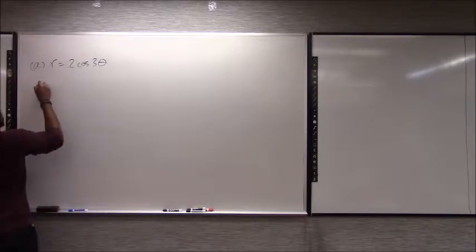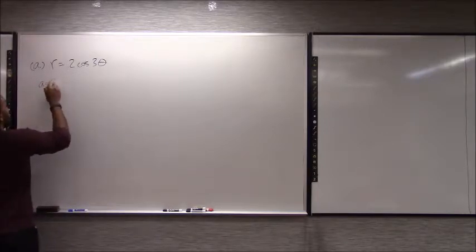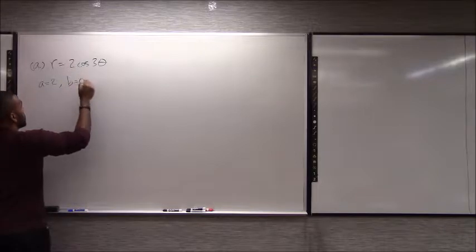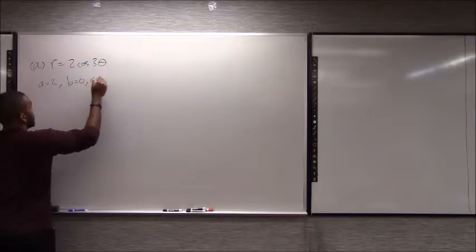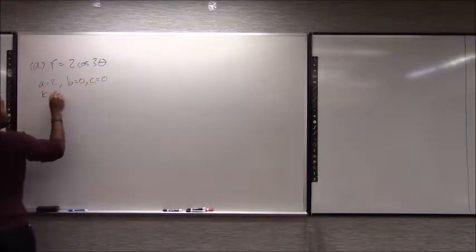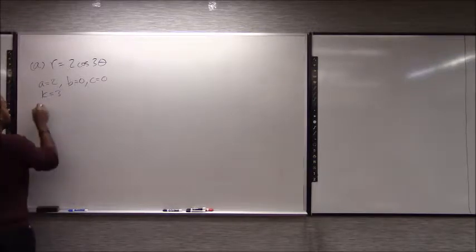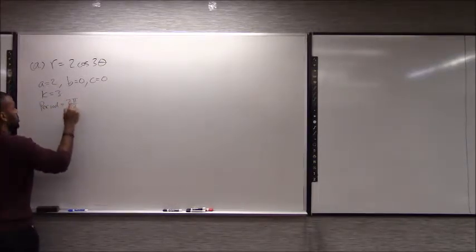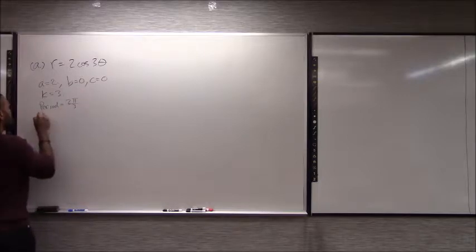So A is equal to 2, B is 0, C is 0, and K is 3. The period is 2π/3, and then the period divided by 4 for graphing is π/6.